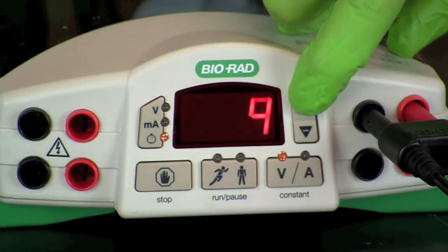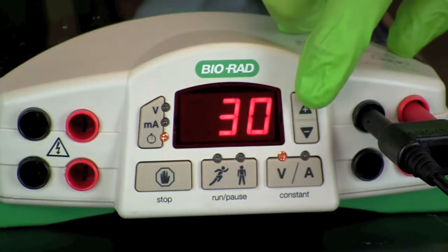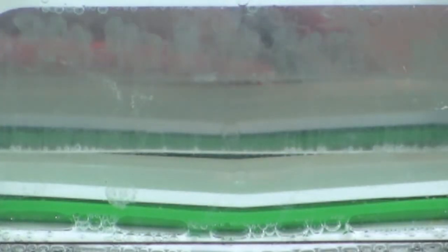If a timer is available, set the timer for 30 minutes. As the power is turned on, look for the release of bubbles from the electrode in the inner chamber. Watch the progression of the blue tracking dye in the Laemmli sample buffer and the separation of the pre-stained standards down the gel as the electrophoresis progresses.